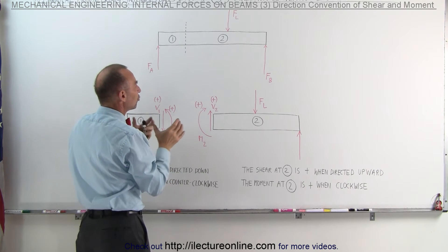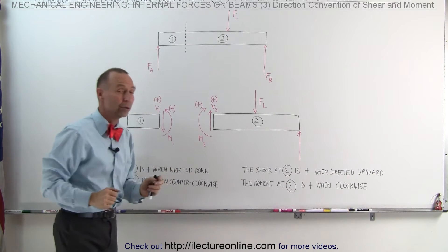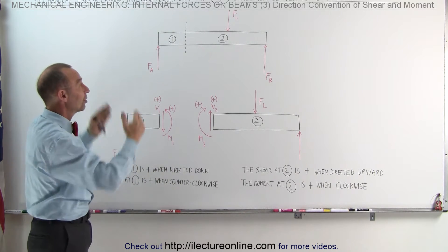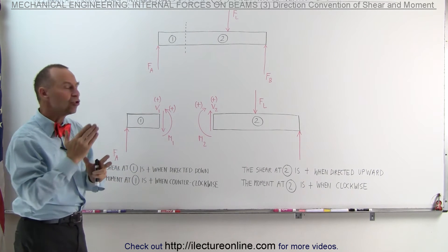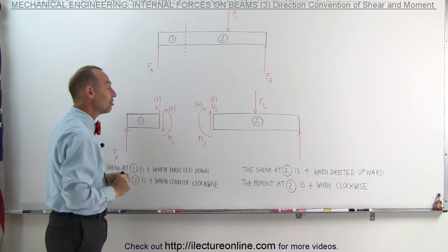So what we're going to do is draw free body diagrams of section 1 and section 2. Now notice, those are simply imaginary sections because it's a solid beam all the way through from A to B. We need to investigate the shear forces and the moment inside the beam at that location.